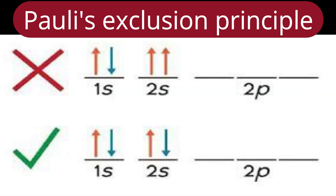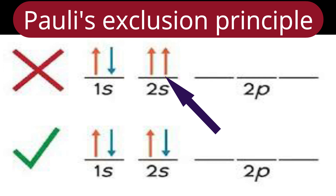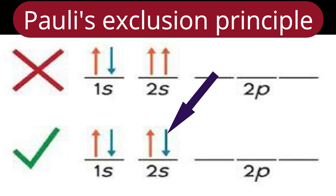Consider placing two electrons in the 2s orbital. Two possibilities: both electrons have the same spin, or both have opposite spin. If both have the same spin, all four quantum numbers are identical — not allowed. To distinguish their addresses (quantum numbers), the second electron must have the opposite spin to the first. So the second arrangement — with opposite spins — is correct, based on Pauli's exclusion principle.